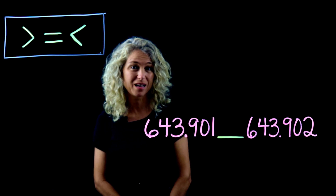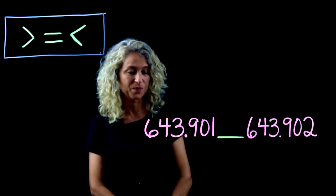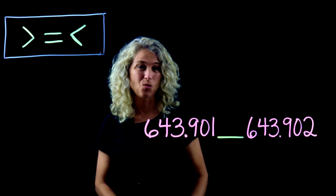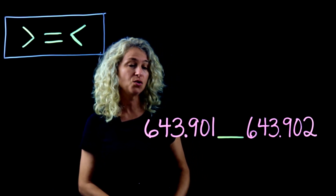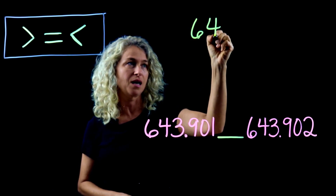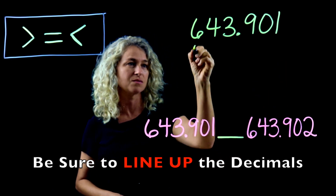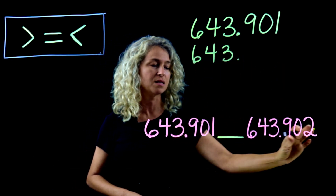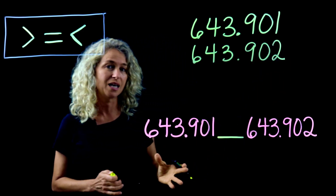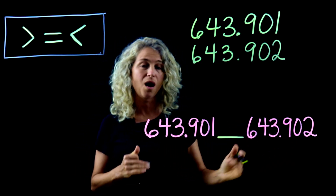Today we're going to learn about how to compare decimal numbers to the thousandths place value. There's one foolproof method that works every time: you can stack the numbers, rewrite them, and make sure when you rewrite that you line up the decimals. Now we're writing this number, and this is an easy way for you to see the comparisons.